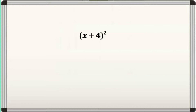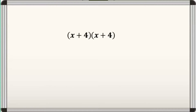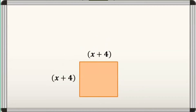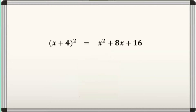From our previous activity, one of the given square of binomials is the quantity x plus 4 squared. We know based from its exponent that it is equal to quantity x plus 4 times quantity x plus 4. We can think of these two factors as the size of the square, since a square has length and width that are equal. If these are the dimensions of the square, the area would be equal to x squared plus 8x plus 16.